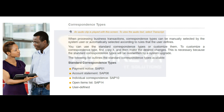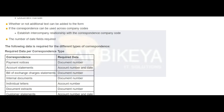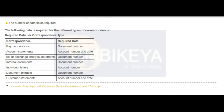A correspondence type represents a type of letter in the system. You have to create a correspondence type for every type of letter you need. The data in the table is either entered manually by the user or determined automatically by the system after the user has selected the relevant correspondence type.